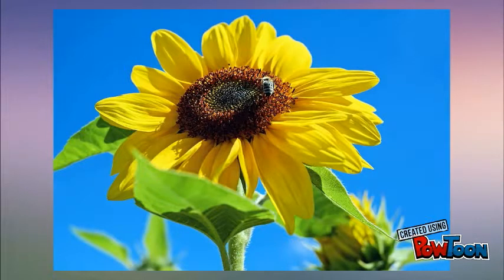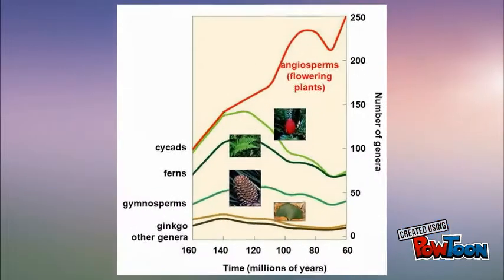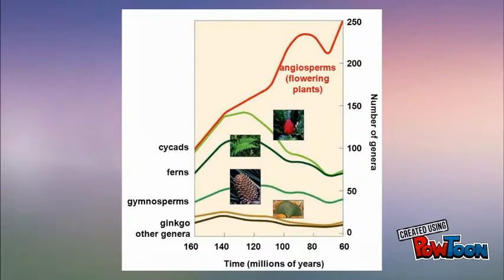Angiosperms have a different way of reproducing. They use bright flowers and sweet nectar to attract pollinators who have co-evolved alongside the plants. They also use fruits to disperse seeds and protect them. Since the Mesozoic era, angiosperms have been the most successful plants by far. Not all plants reproduce in the same way, but they all have one thing in common: they are the basis for every food web and ecosystem on Earth.